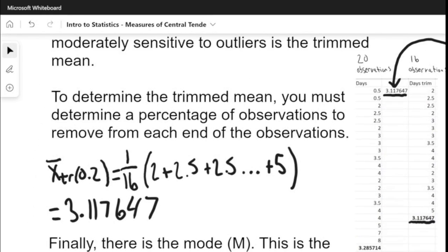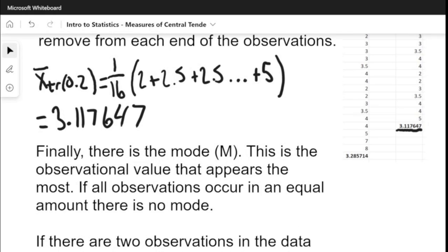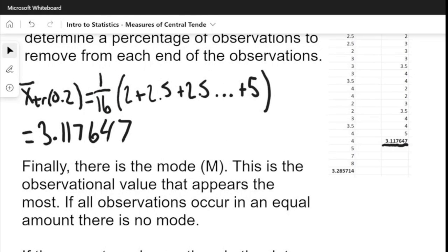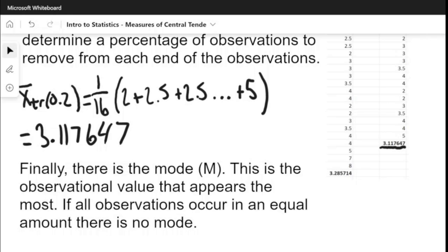You can calculate this by hand using this formula here. X-bar trimmed by, in this case, 10% or 20%, so two observations off each end, would equal 1 divided by the new number of observations, which is only 16 when you subtract the two removed from each end. Then you would sum all those up and multiply it by 1/16, and that gives you the same answer, 3.117.